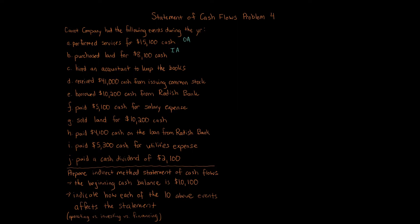C — hired an accountant to keep the books — that's not going to be anything on the statement. D — receive $41,000 cash for issuing common stock — that's going to be a financing activity because we're dealing with the issuance of common stock. E — borrowed $10,200 cash from Radish Bank — that's going to be a financing activity because we have a long-term note from borrowing from the bank. If it was a current liability, it would be considered an operating activity, but borrowing from the bank is more likely long-term, so we put that as financing.